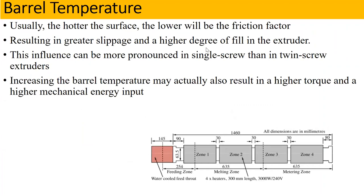We have seen that when the temperature increases, we get less friction. When we get less friction, we get greater slippage and reduced resistance. The extrusion process achieves a higher degree of fill. This friction effect was noted more in the single screw compared to twin screw, because the heat transfer is a little different in twin screw extruders.